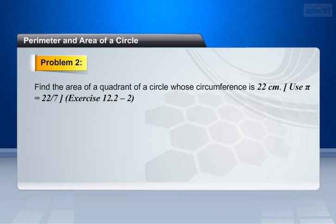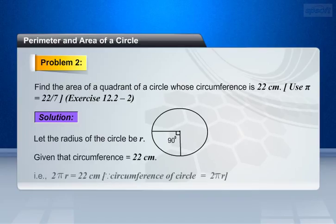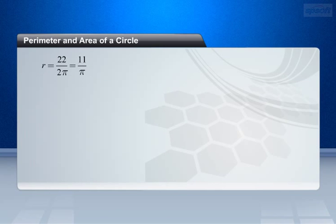Problem 2: Find the area of a quadrant of a circle whose circumference is 22 cm. Use pi equals 22 by 7. Solution. Let the radius of the circle be r. Given that circumference equals 22 cm, that is 2 pi r equals 22 cm, since circumference of circle equals 2 pi r. This implies that r equals 22 by 2 pi, which equals 11 by pi.